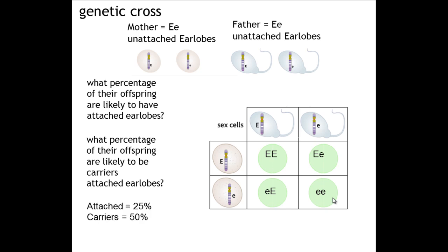A carrier is technically known as an individual who carries the allele for a certain condition. So in this case, if the condition is having attached earlobes, then the two individuals who are heterozygous — small e, big E — are what's technically known as carriers. If this were a genetic disease, we would sometimes refer to the affected individual as a sufferer, and in the 25% case you would expect that outcome.